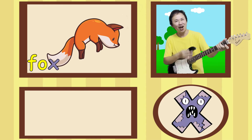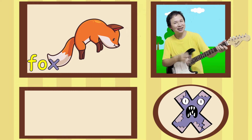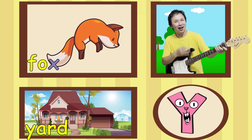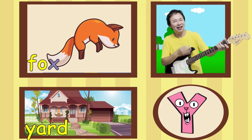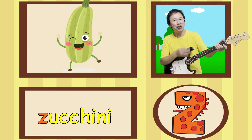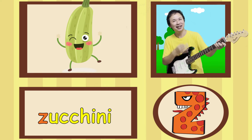X as in fox. x, x, x. Y is for yard. y, y, y. Z is for zucchini. z, z, z.